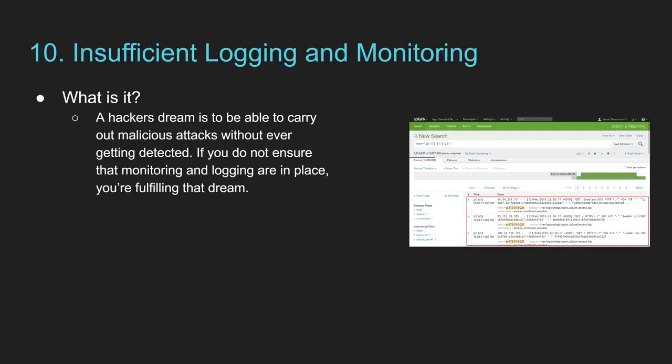Number 10 is insufficient logging and monitoring. As the name says, if you are not logging or monitoring your web application, you don't know what is going on. You need to be aware of what is happening and have the right triggers and alarms set up to respond in time. Otherwise, people can sit for days trying different things, and if you are not discovering that someone is trying to tamper with your application, you have no way of stopping them — because at some point they will find a vulnerability, and you will never discover that they got into the system before it is too late. Always log and monitor your web application — it is crucial to stop your application from being exploited.